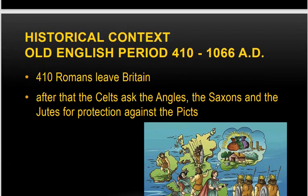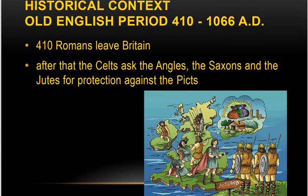Historical context: the Old English period spans from 410 to 1066 AD. It starts with Germanic natives settling down in Britain and ends before the Norman Conquest — the French Conquest — which happened in 1066 AD.